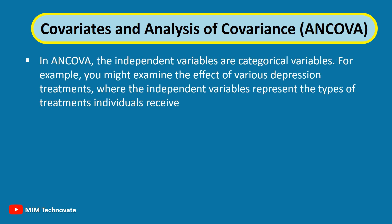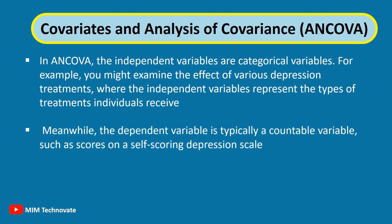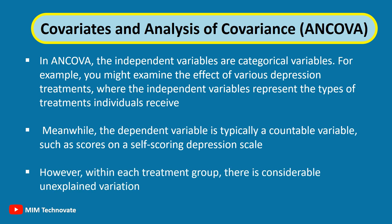This approach enhances the model's accuracy by accounting for the variance associated with the covariate. In ANCOVA, the independent variables are categorical variables. For example, you might examine the effect of various depression treatments, where the independent variables represent the types of treatments individuals receive. The dependent variable is typically a continuous variable, such as scores on a self-report depression scale. However, within each treatment group, there is considerable unexplained variation.